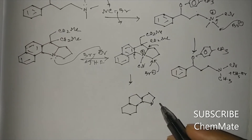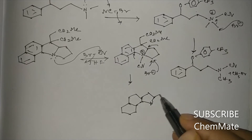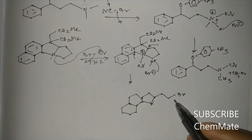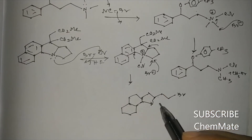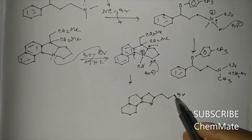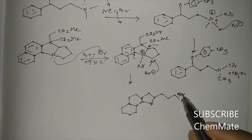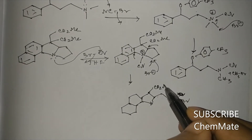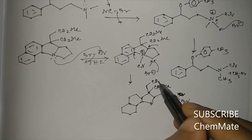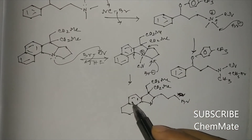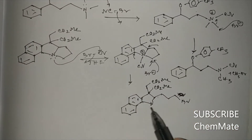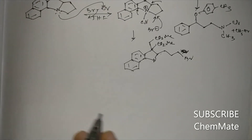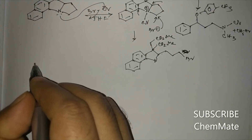The product has the nitrogen with the CN group, and Br minus attacks the isopropyl-type carbon, giving an isopropyl bromide fragment. That will be the overall product of this example.